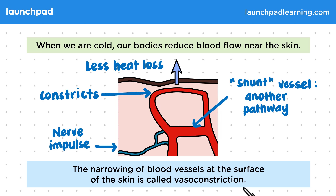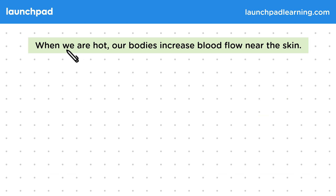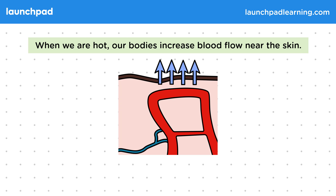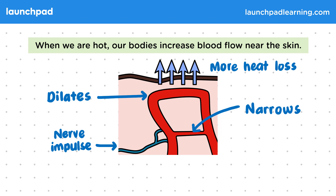So what's the opposite of vasoconstriction? When we are hot, our bodies increase blood flow near the skin. When you've noticed that you're too warm, you might find that your blood vessels are more visible and your skin becomes redder or darker. This is caused by a nerve impulse from the brain, but this time it causes the blood vessel near the skin to dilate. The shunt vessel instead constricts to direct more blood to the skin, giving more heat loss overall.